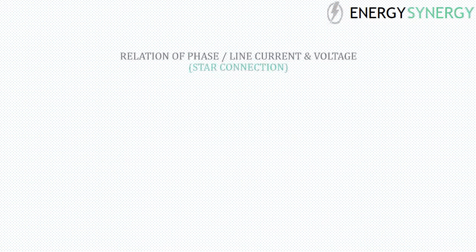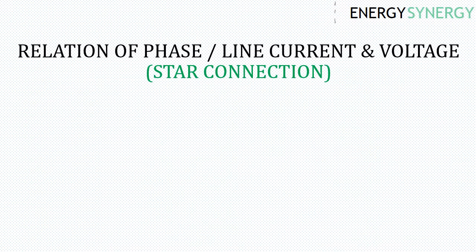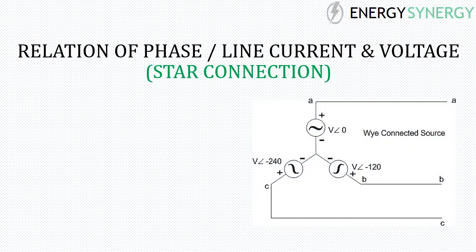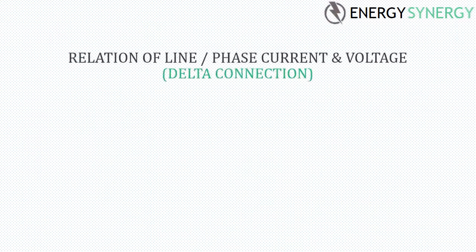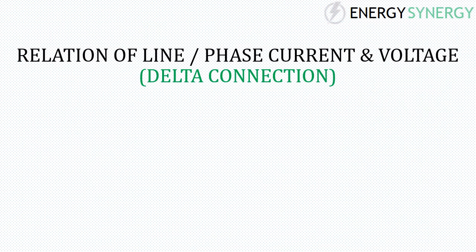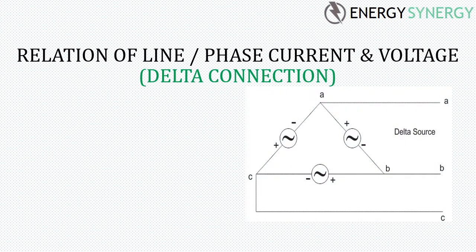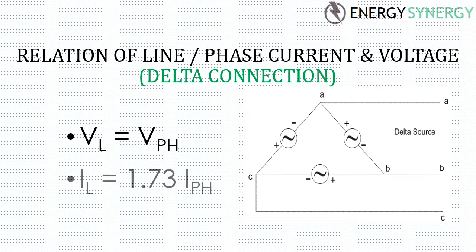The last topic is the relationship between phase and line current or voltage. In a star-connected system, line current is always equal to phase current, and line voltage is equal to √3 times the phase voltage. In a delta-connected system, line voltage is always equal to phase voltage, and line current is equal to √3 times the phase current.